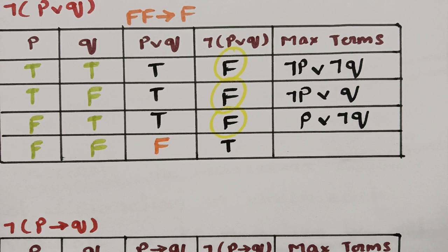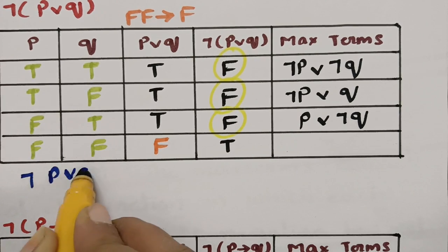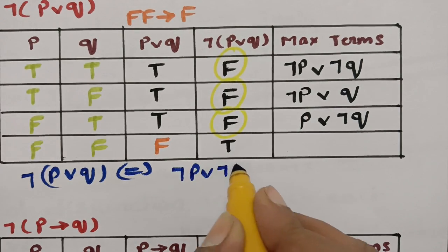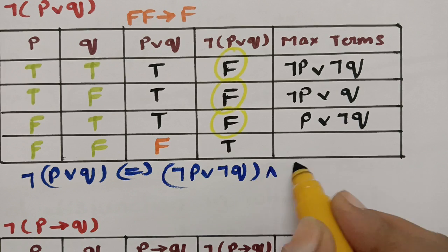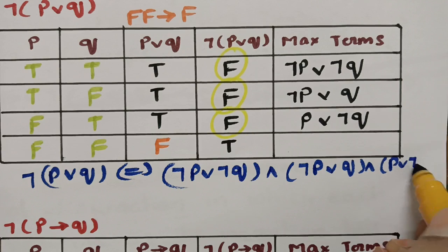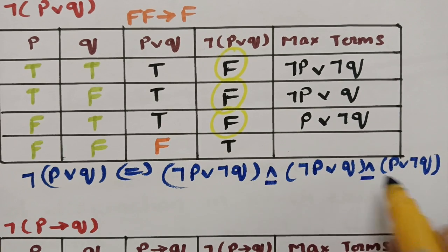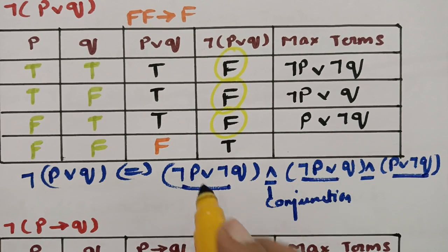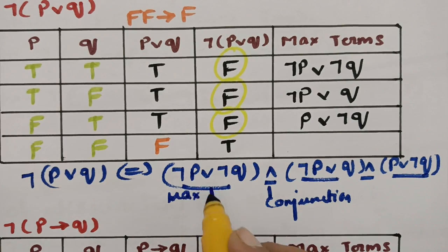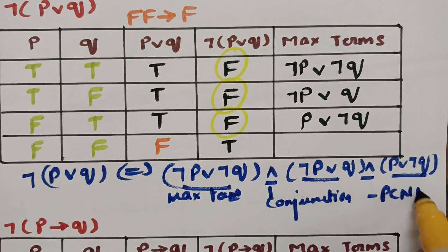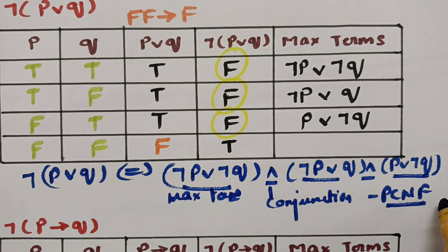So the answer: ¬(P∨Q) is equivalent to (¬P∨¬Q) ∧ (¬P∨Q) ∧ (P∨¬Q). We make a product of all these max terms using the conjunction symbol. These are all max terms, and the product of all max terms is nothing but the PCNF — that is, the Principal Conjunctive Normal Form.